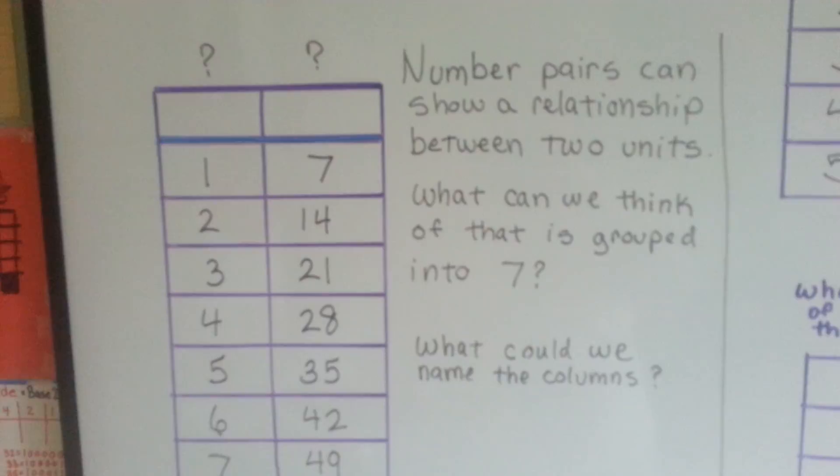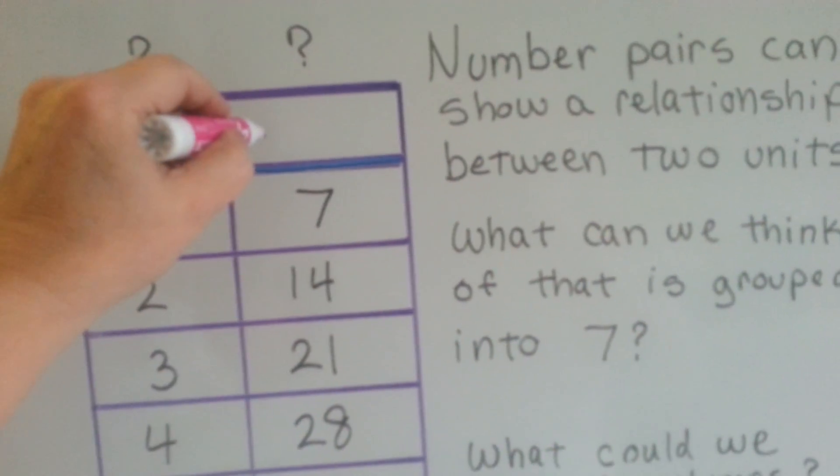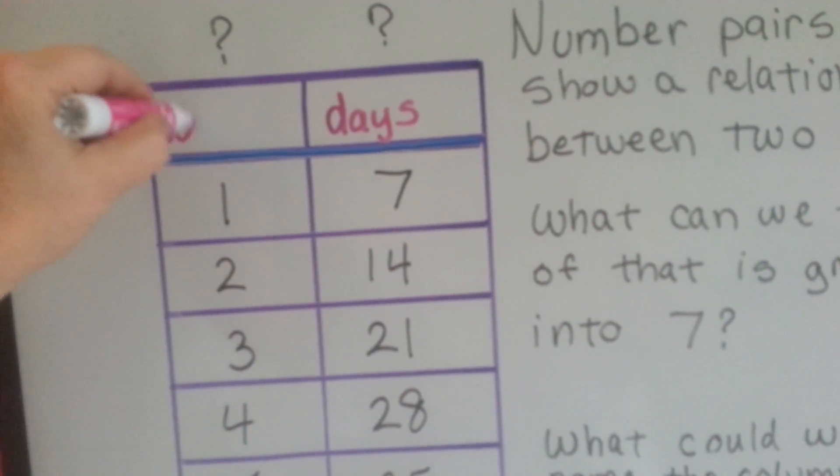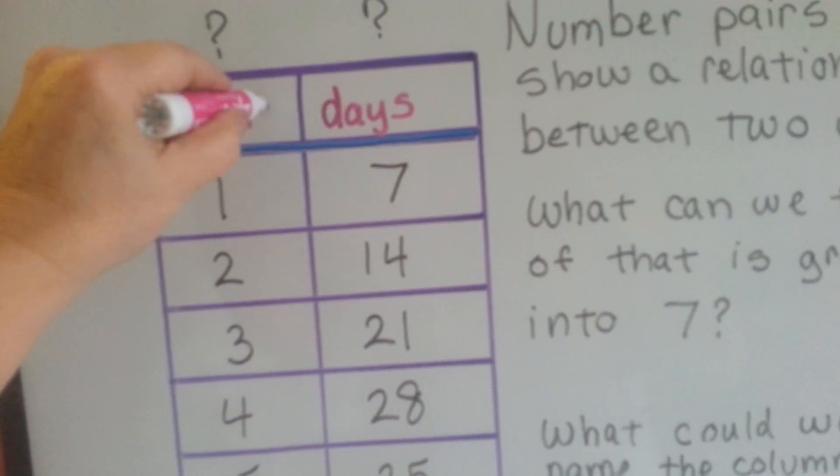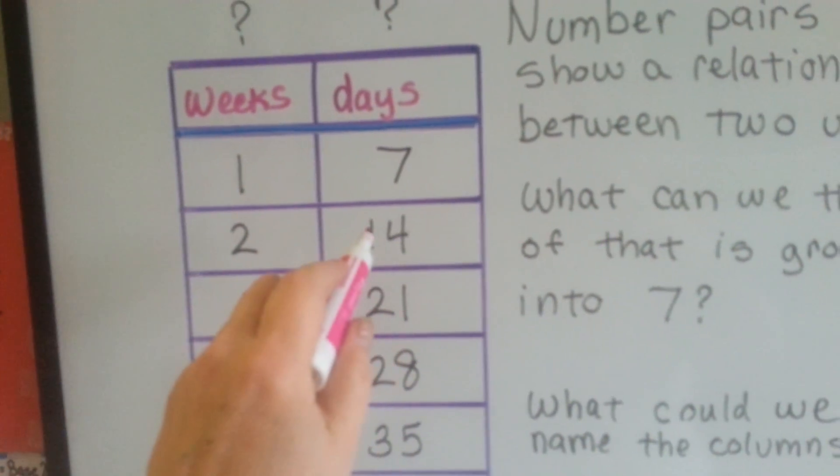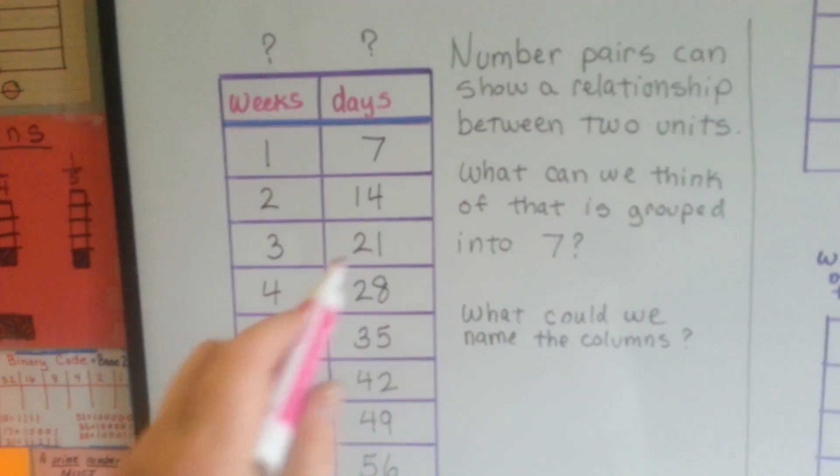Did you think seven days in a week? If you did, you're right. So these would be days and this would be weeks. One week is seven days. Two weeks is 14 days. See how the number pairs have a relation?